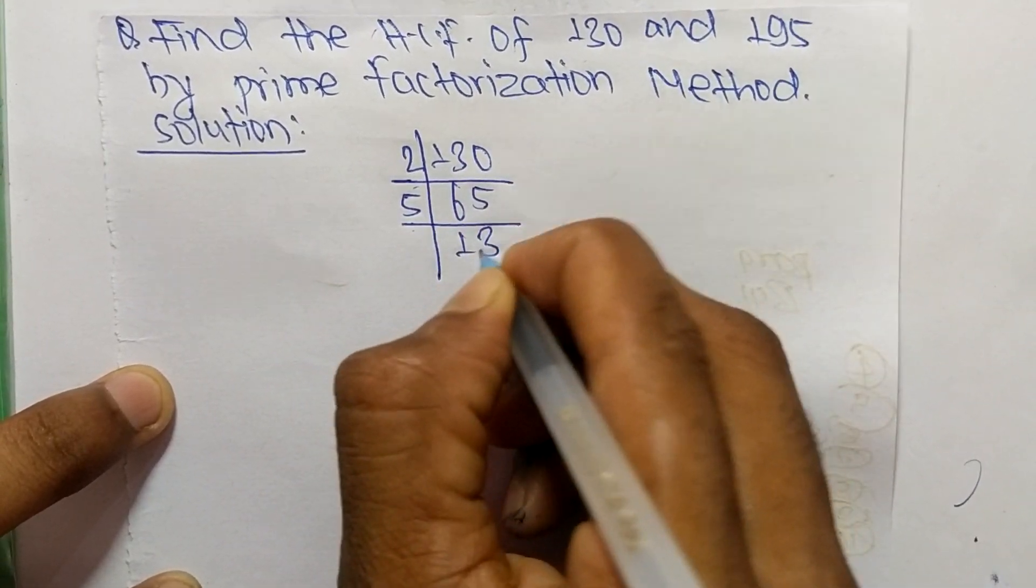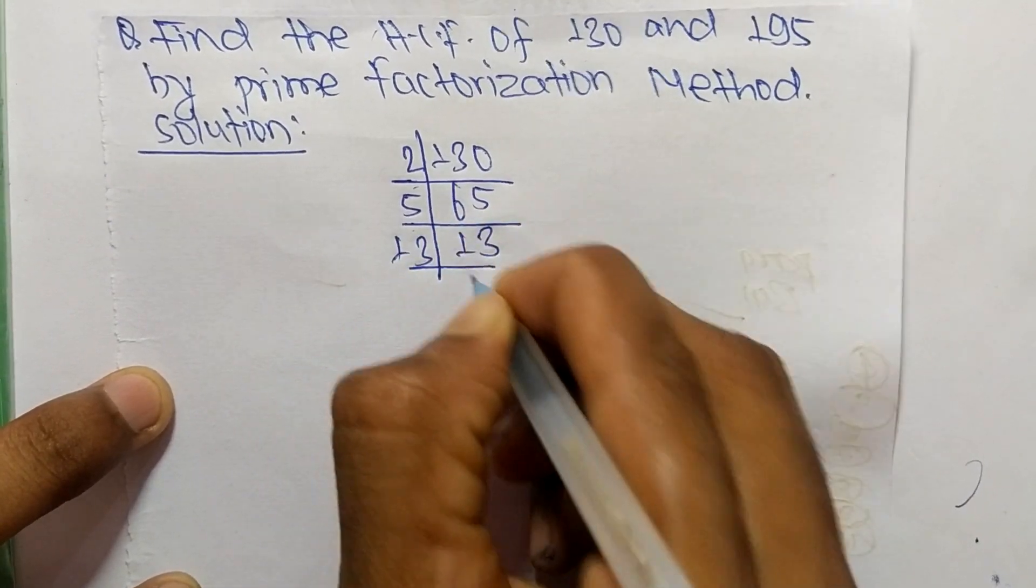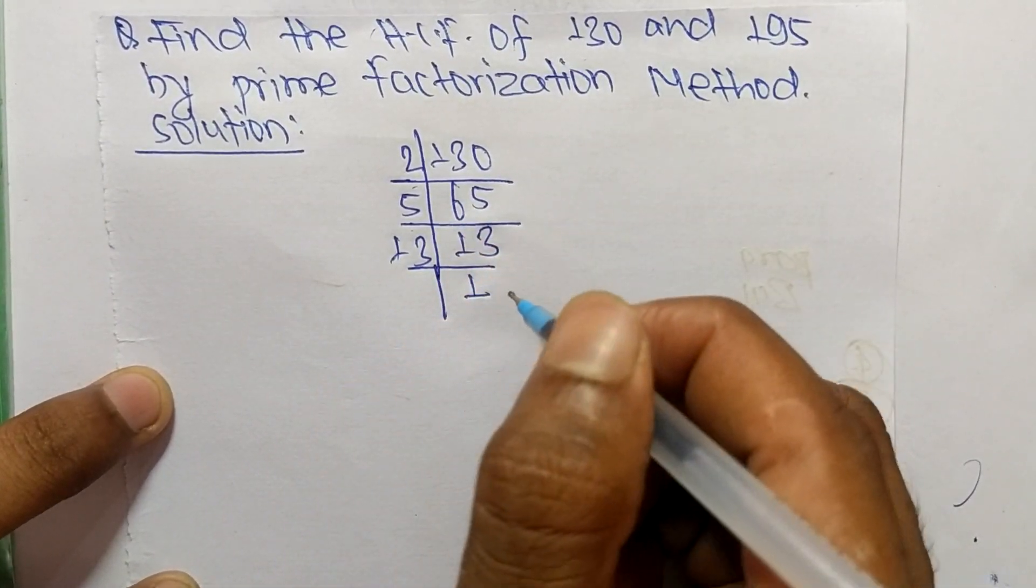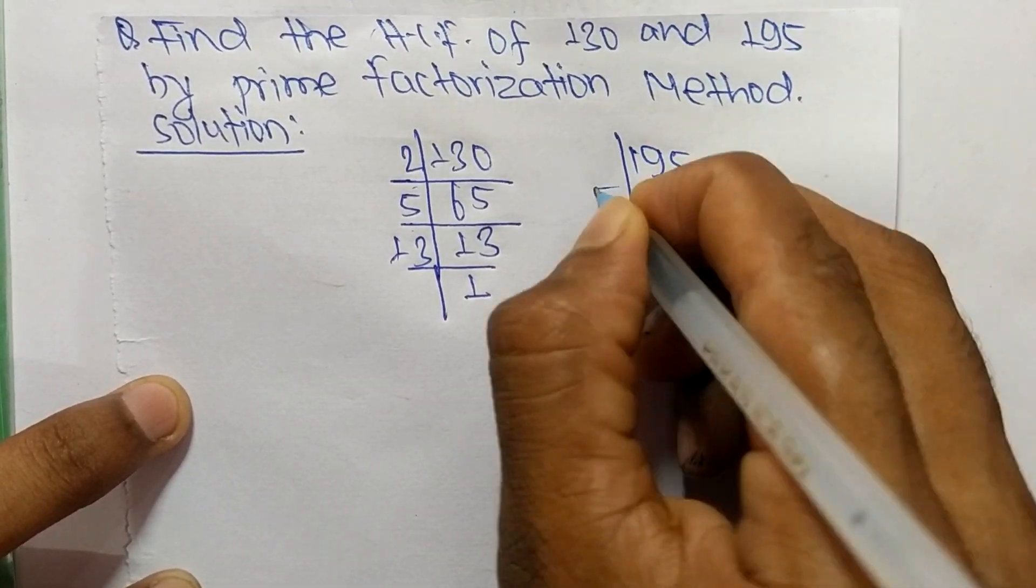Then 5 times 13 equals 65, and 13 times 1 equals 13. Like this, the prime factors of 195 are...